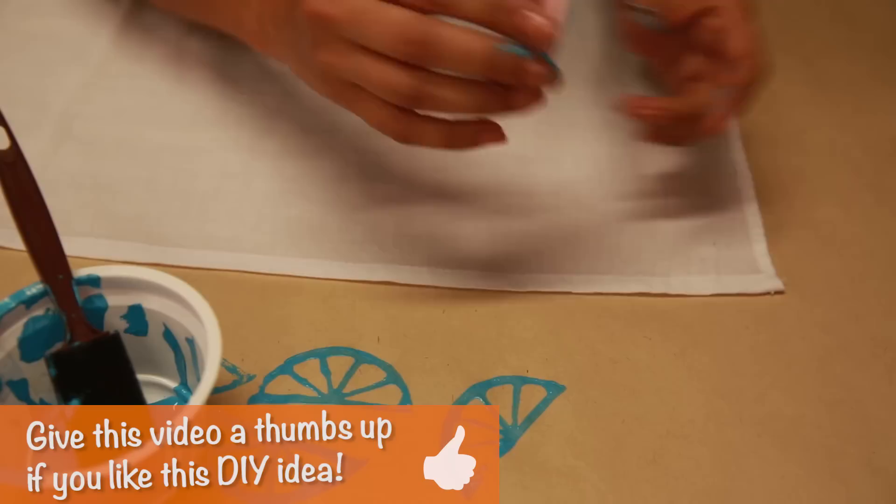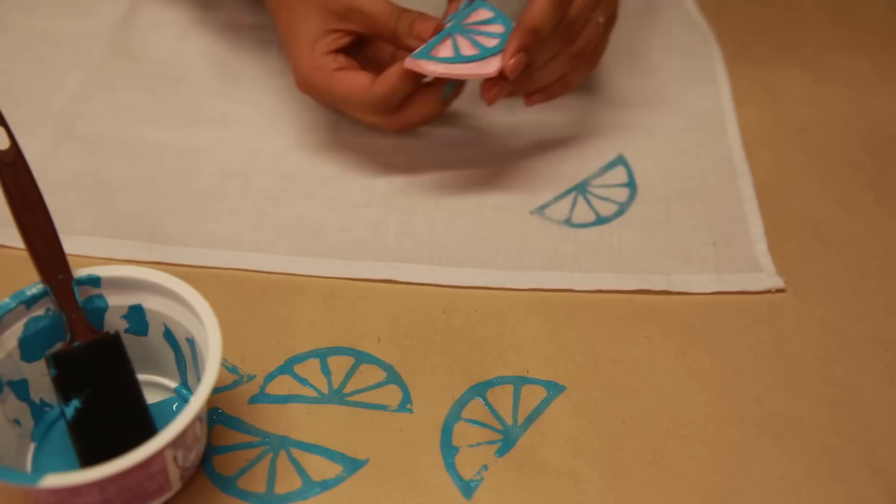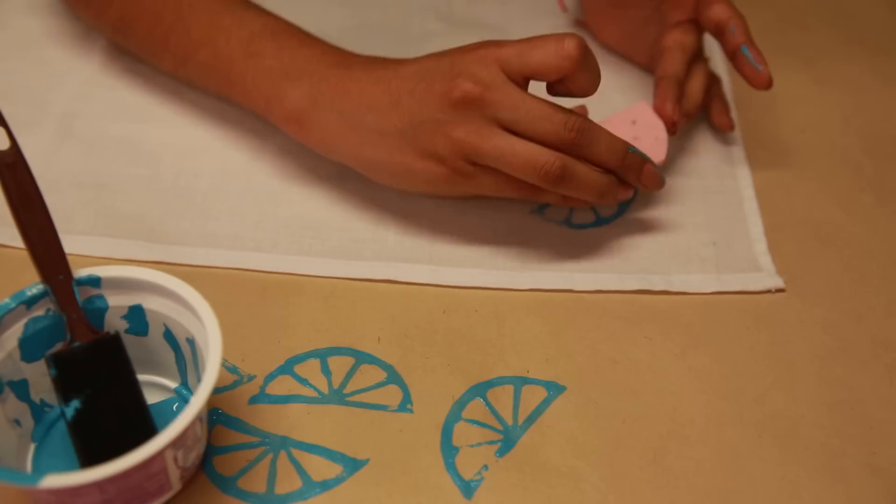Every time you stamp, you want to apply another thin coat. Push down a little bit. Lift up. Don't lift this way or this way or this way. You just want to lift straight up. That way you don't get any mess on the side.